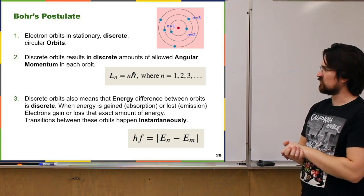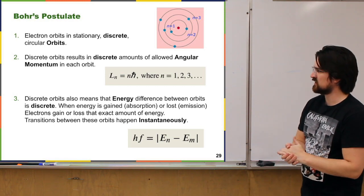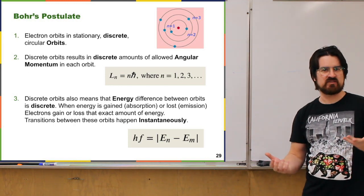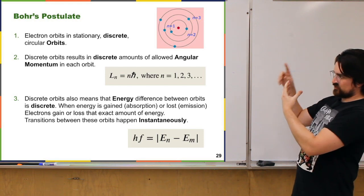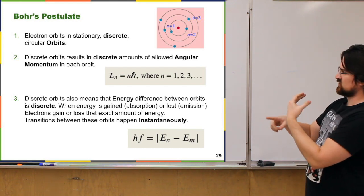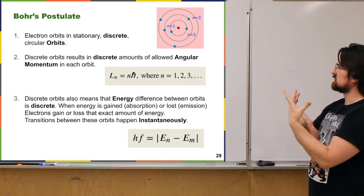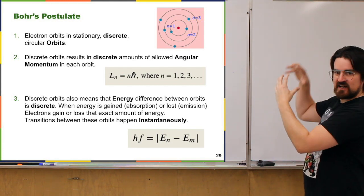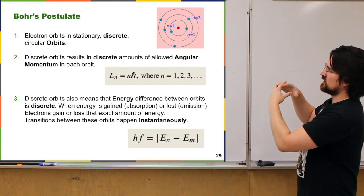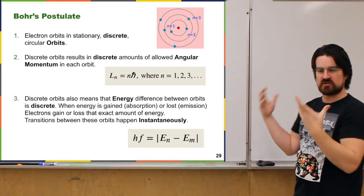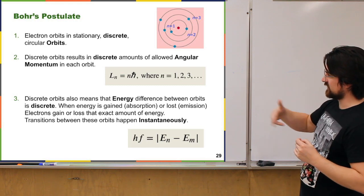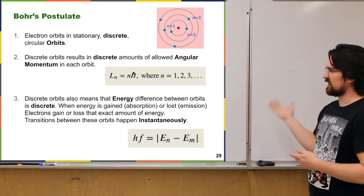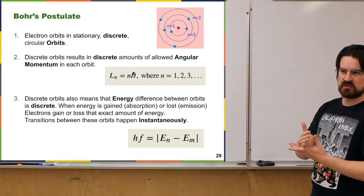The second postulate concerns the angular momentum of the electrons. It follows that if the orbits are discrete, then the angular momentum an electron can have is also discrete. For circular motion, angular momentum is simply the momentum times the radius of the circular path. So if the orbits are discrete, the radii are discrete, meaning angular momentum is discrete. You can write it as n times h-bar, where h-bar is Planck's constant divided by 2π. The angular momentum of these electrons is some multiple of h-bar.